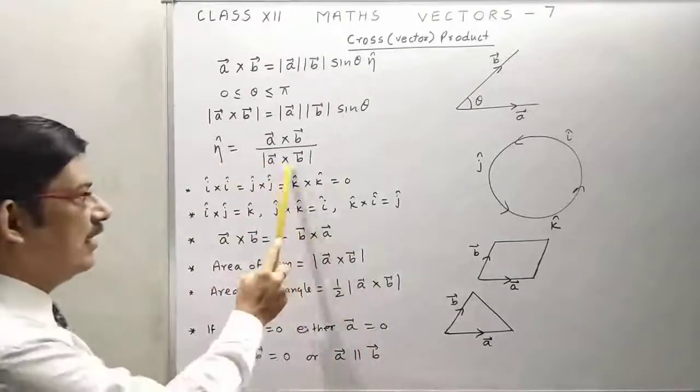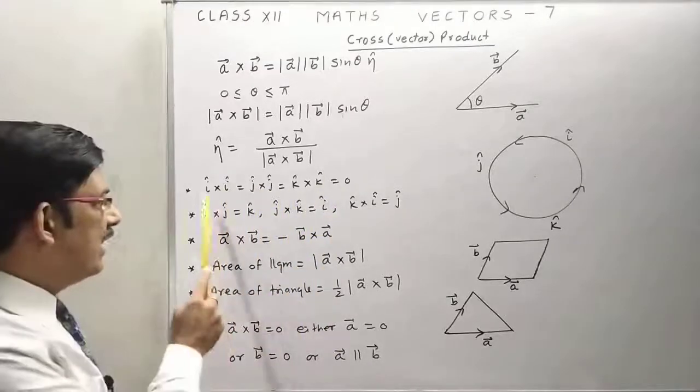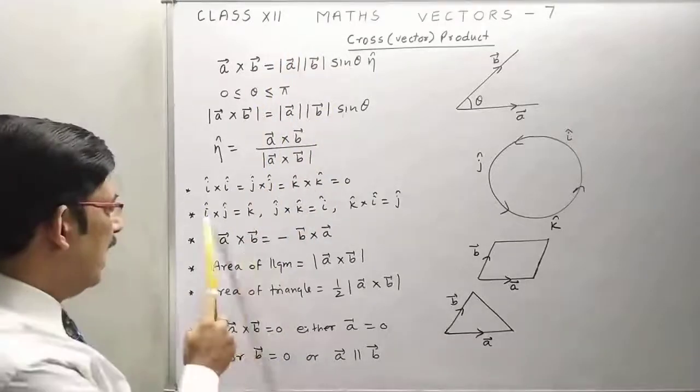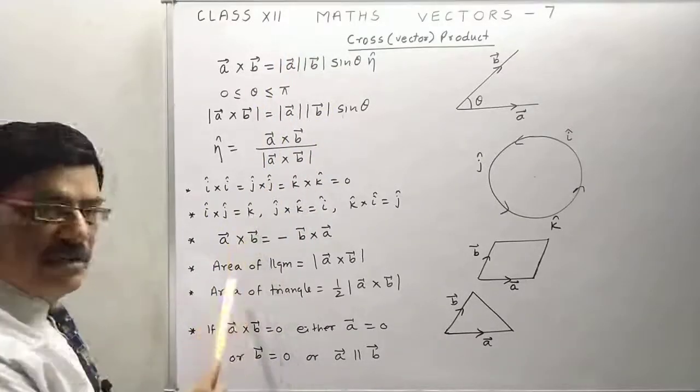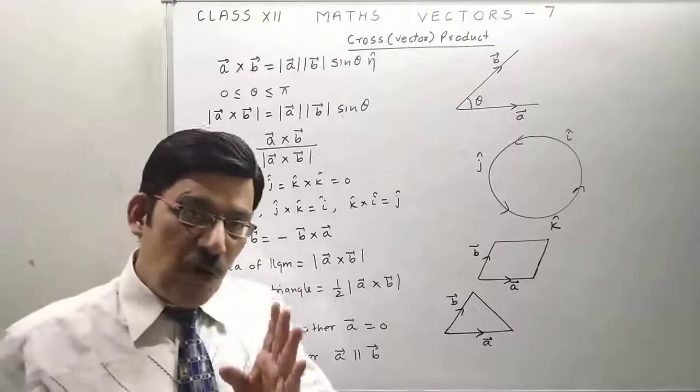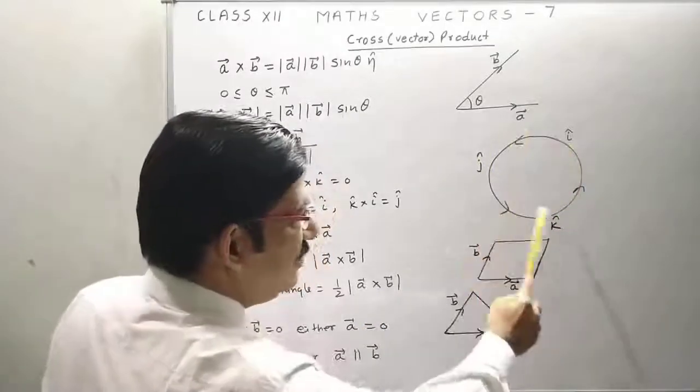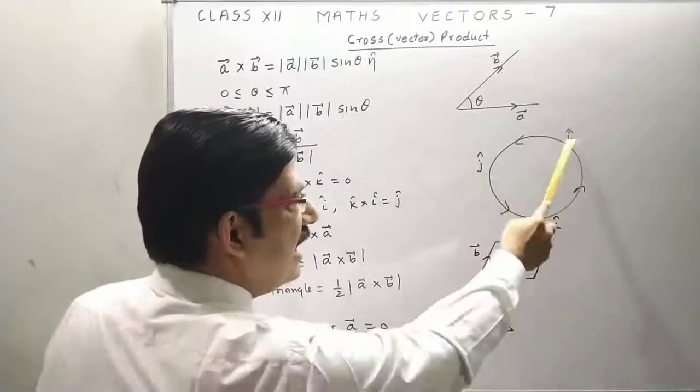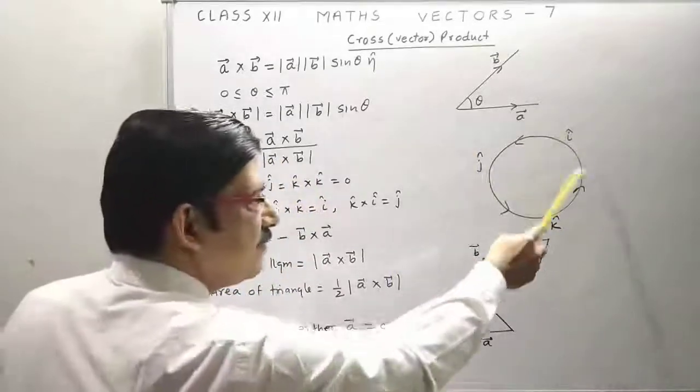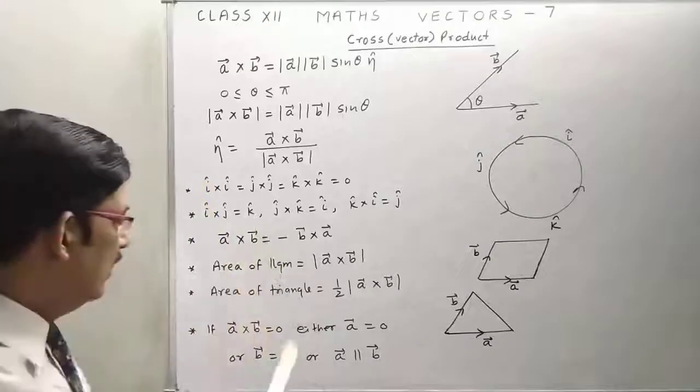Now, i cross i, j cross j, k cross k will be 0 because the angle between them is 0 and we know sine 0 is 0. i cross j will be k because we have k vector which is normal to both vectors i and j. You can find like this: i cross j equals k, j cross k equals i, and k cross i equals j. Or if we reverse this process in clockwise direction, we will get a minus sign.